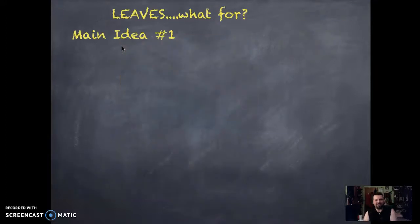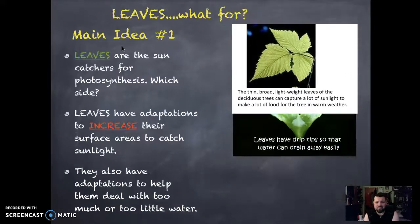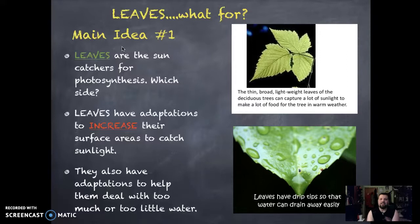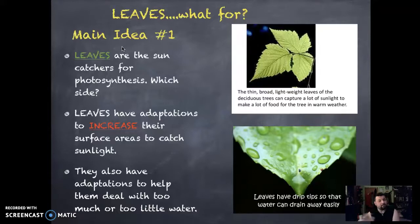So what do leaves do? They catch sunlight — that's what they're there for. The bigger they are, the more light they're going to catch, which is great for the plant and allows it to continue making photosynthesis happen. Leaves also have many adaptations. Deserts have cacti, rainforests have tons of different varieties of plants and leaves. Notice that leaves have little drip tips for water — water is a big player in a leaf's life.